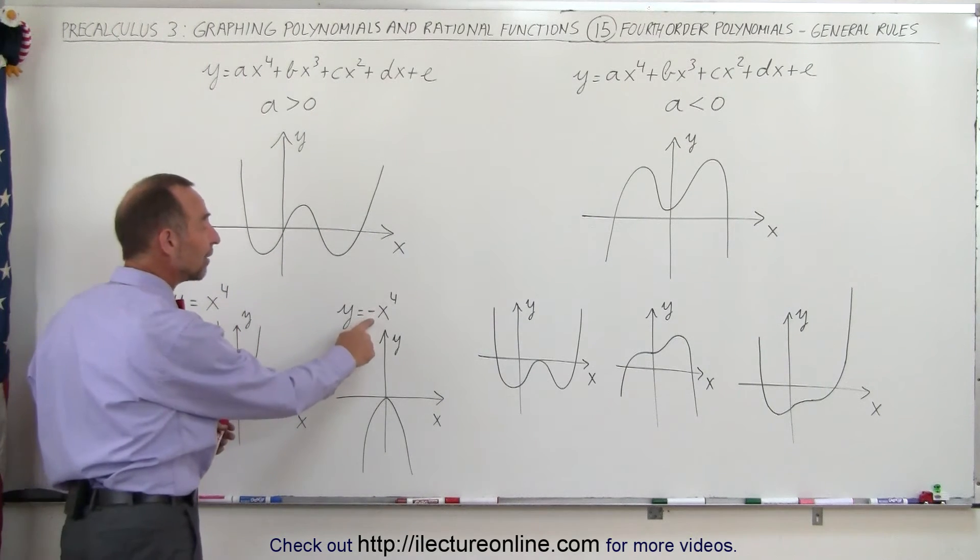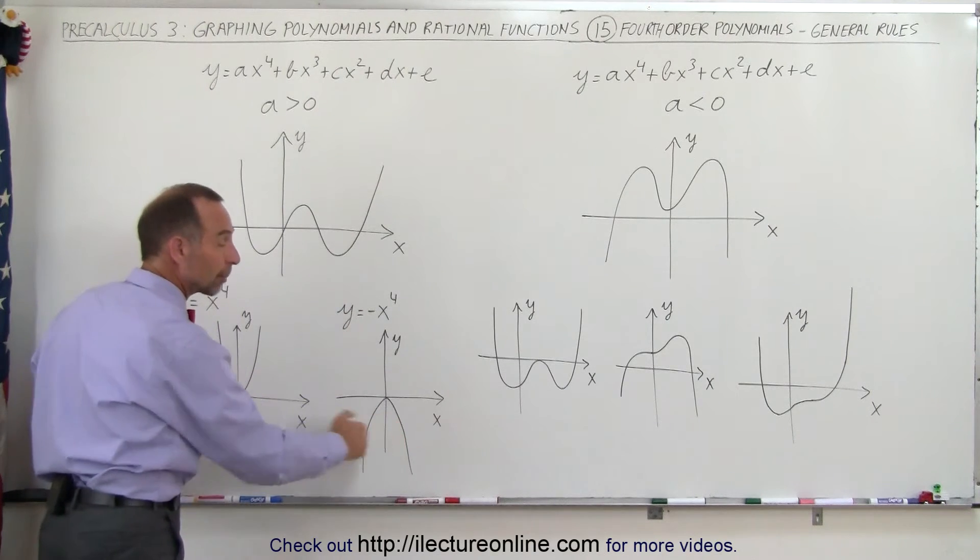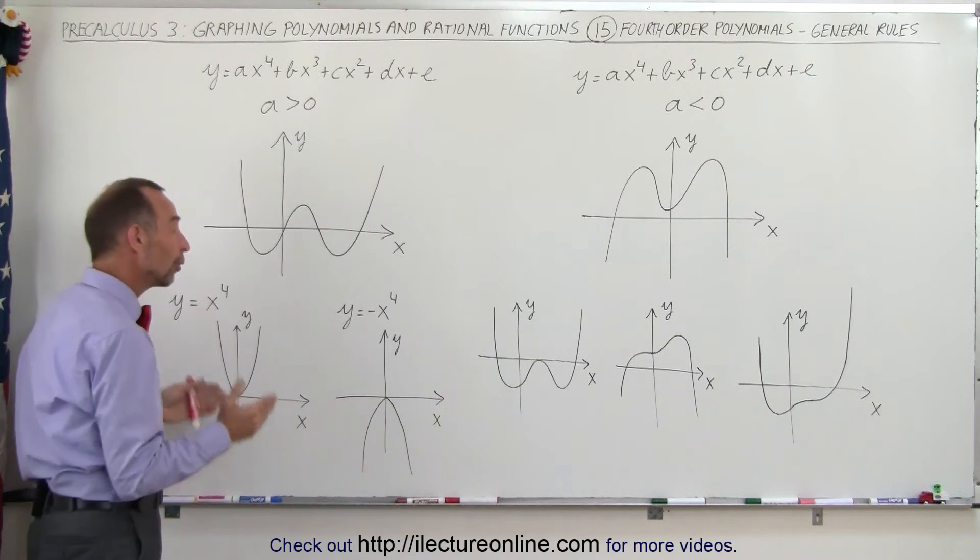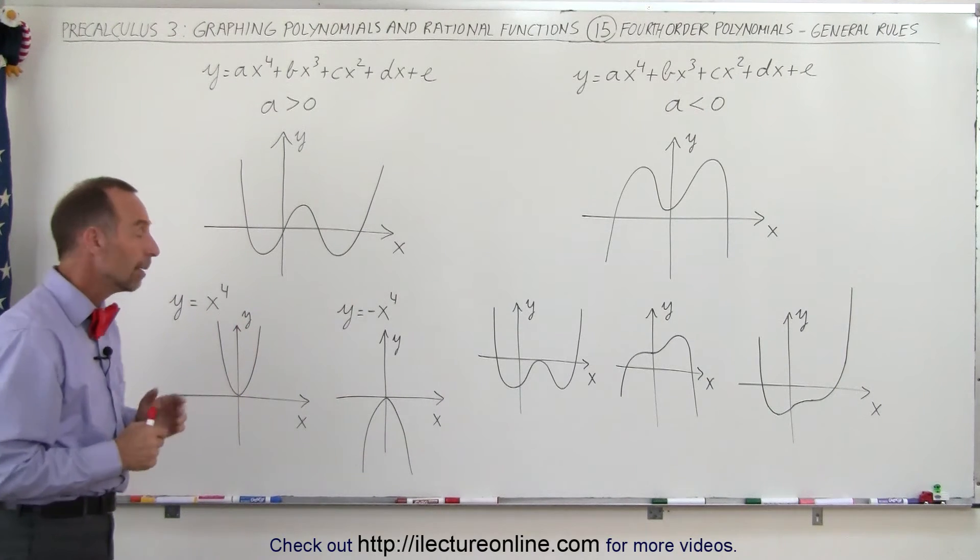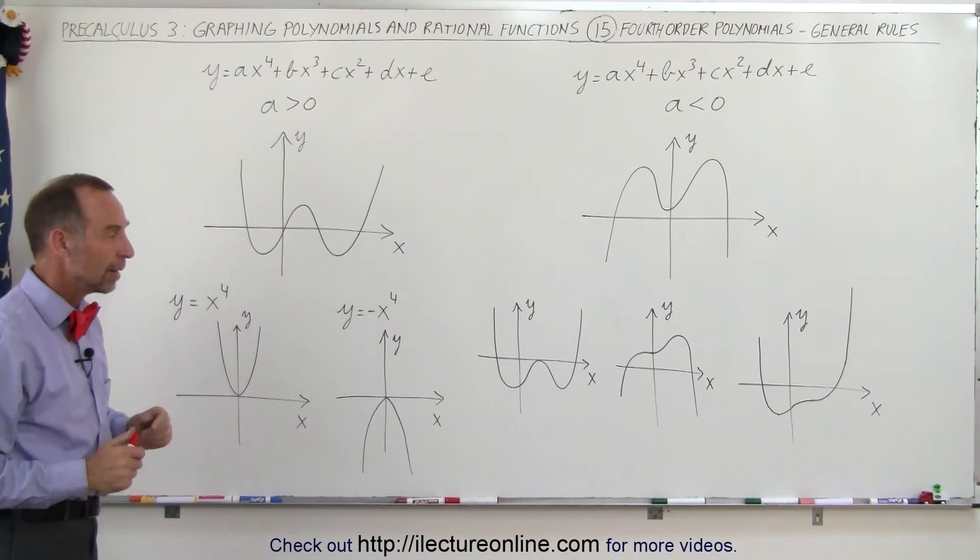And if this is a negative x to the fourth power, it also looks like a parabola which is upside-down. The only difference is that it probably grows much more quickly and tends to be a skinnier parabola because it's x to the fourth power.